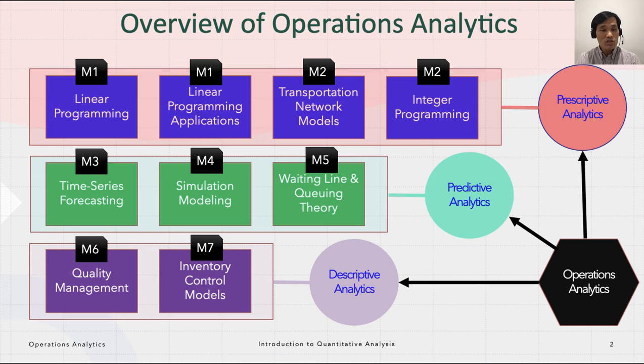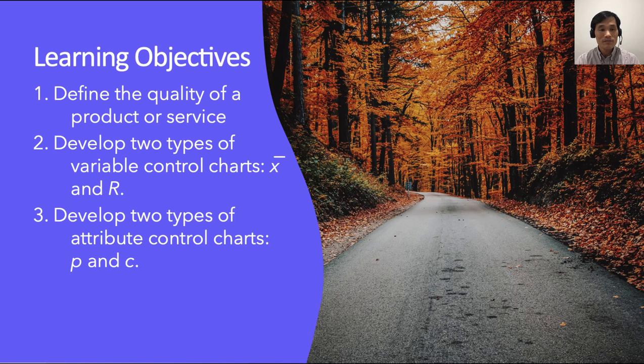In this lecture, we will focus on quality management. The learning objectives are threefold: define the quality of a product or service; second, develop two types of variable control charts, X-bar and R; and develop two types of attribute control charts, P and C.